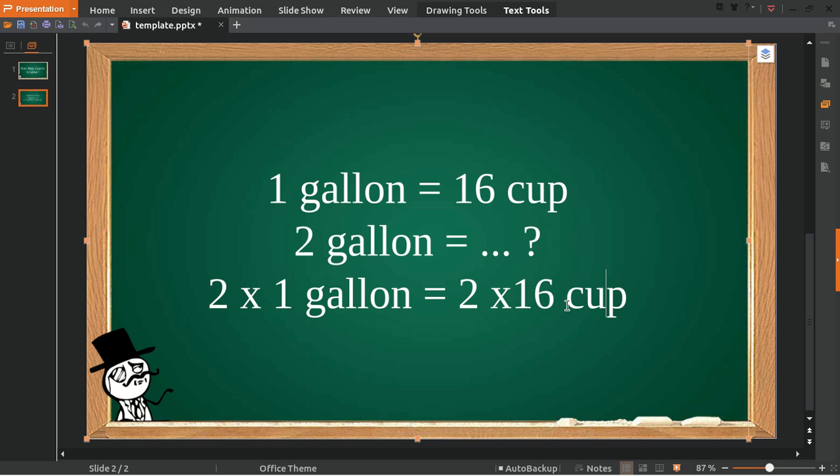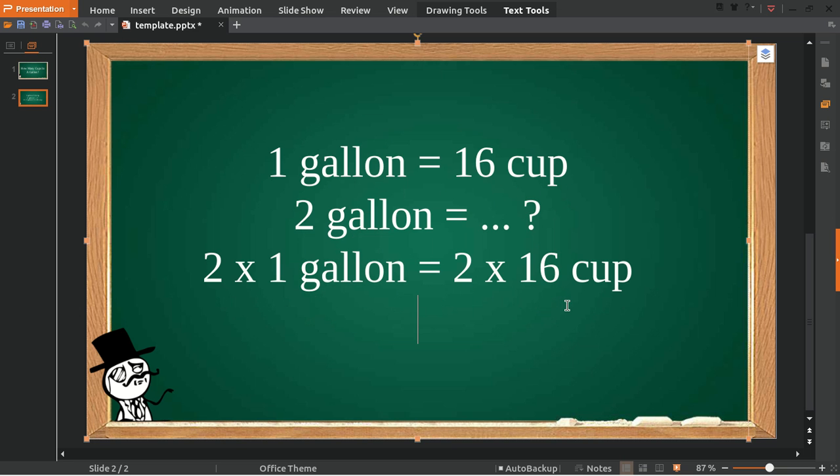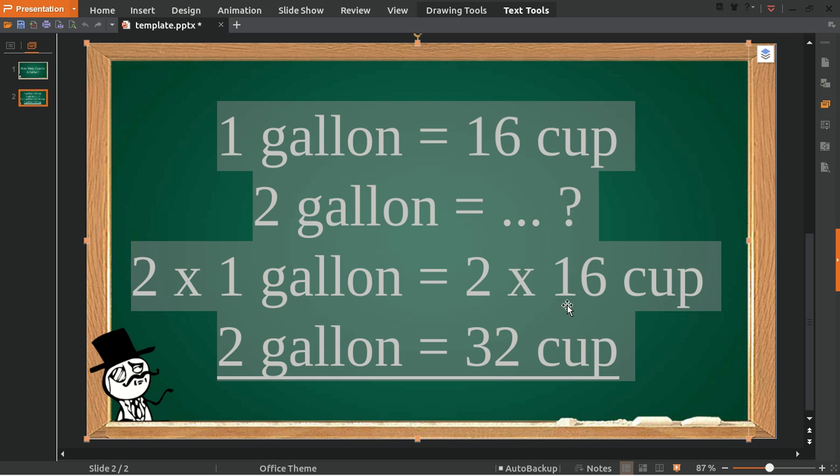Then we multiply 2 with 16 cups. Now 2 gallons is equal to 32 cups. That's the answer to the question.